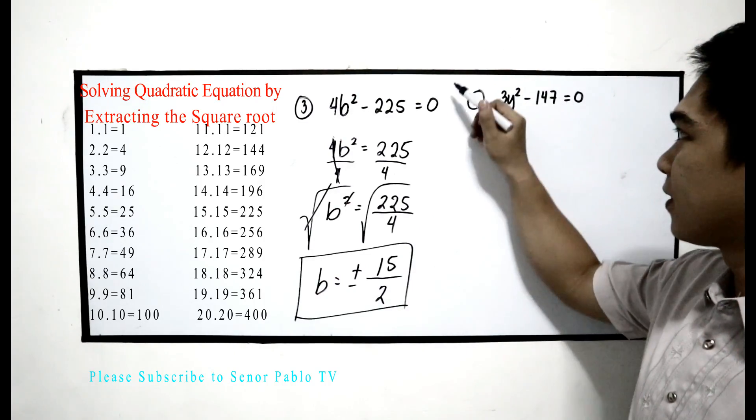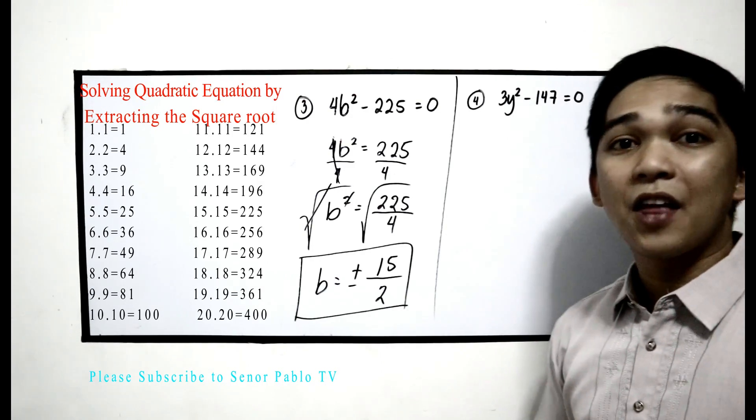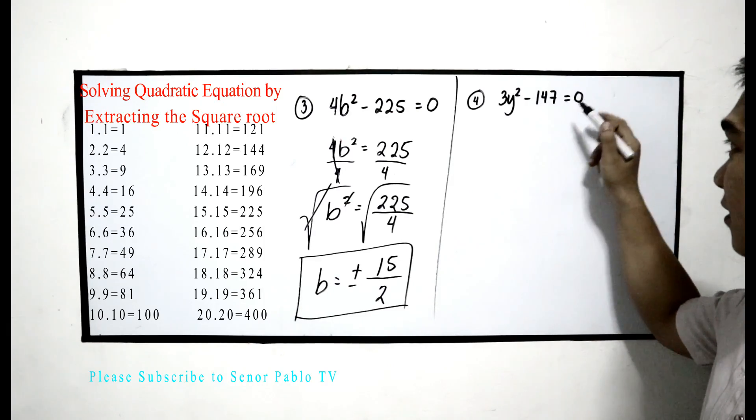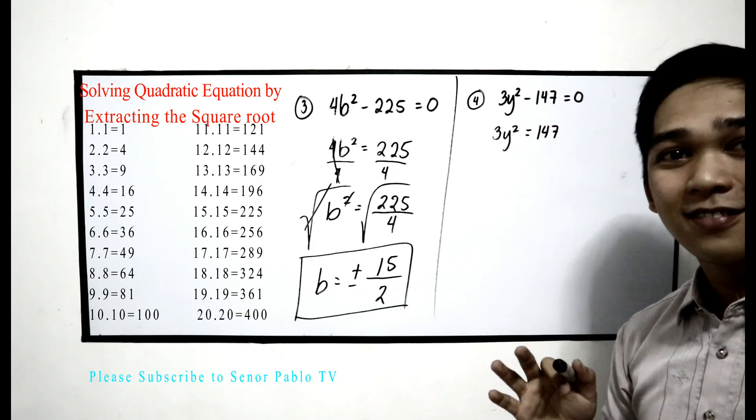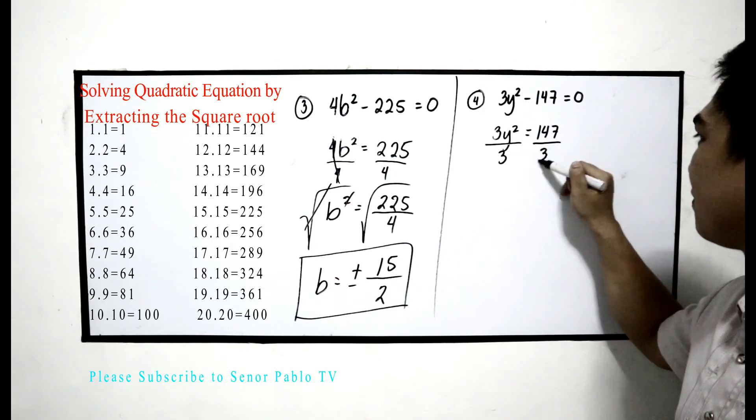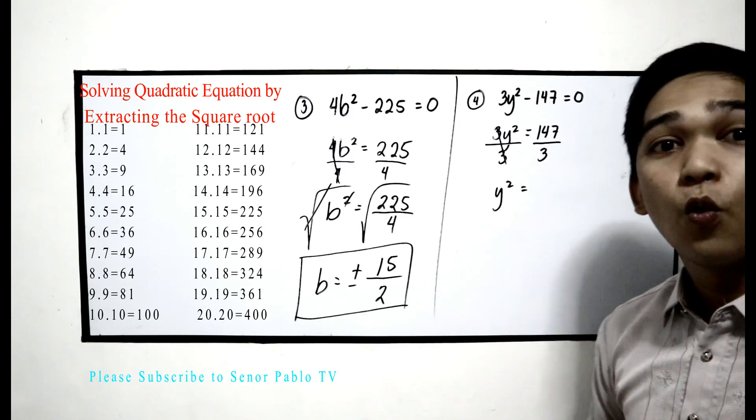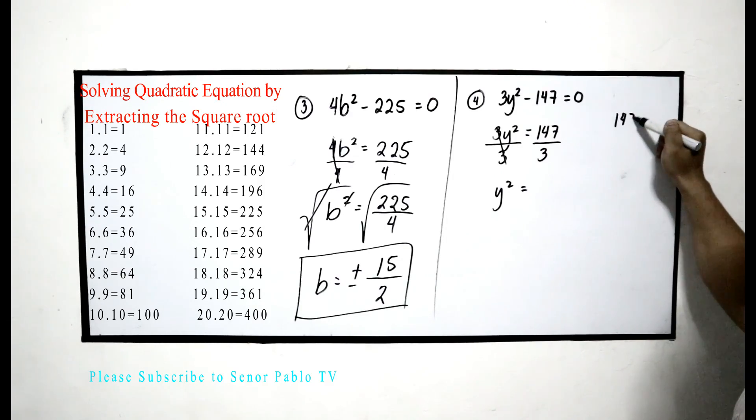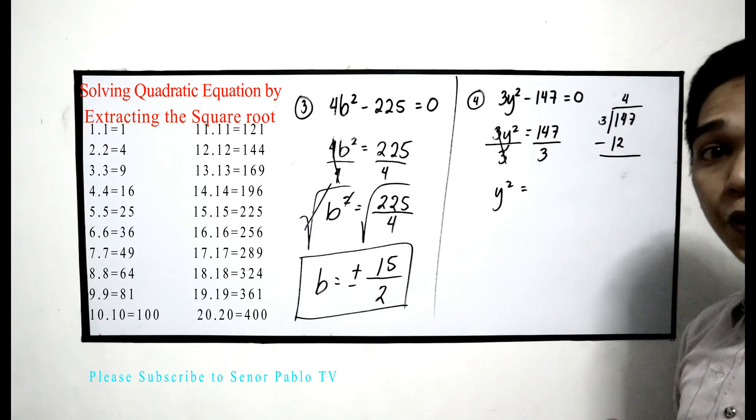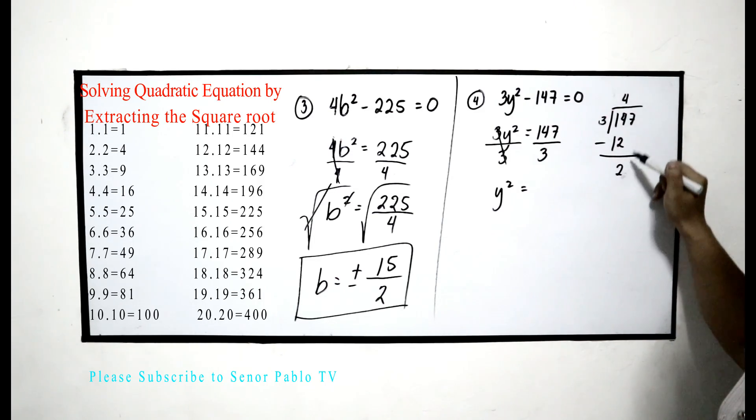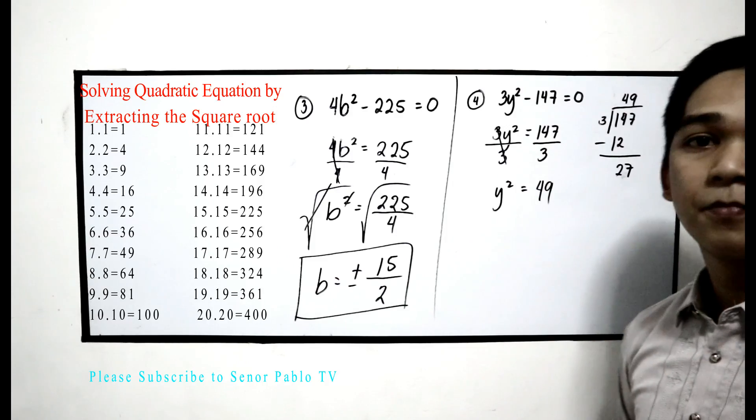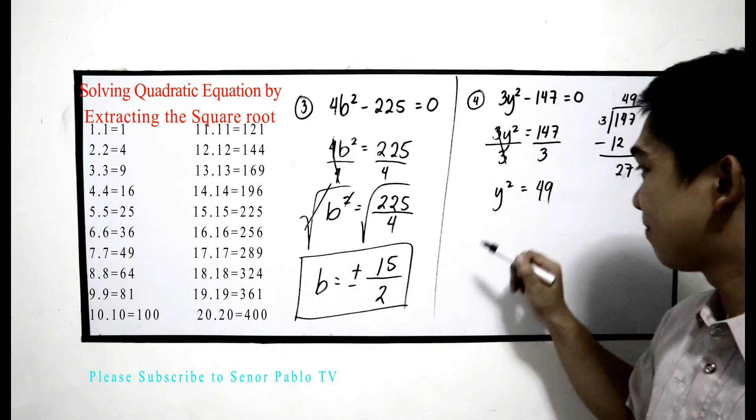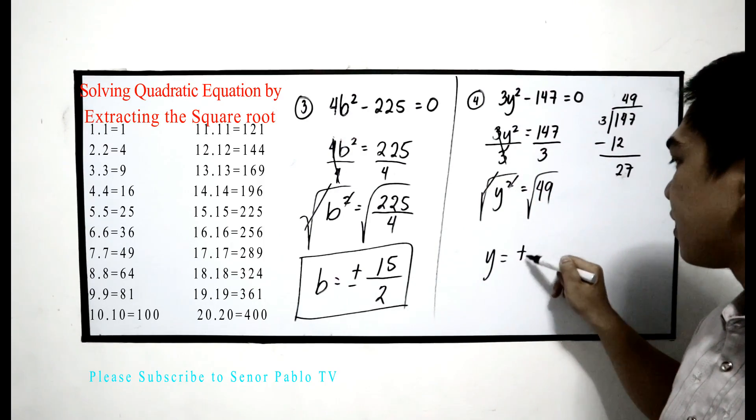Fourth example: 3y² - 147 = 0. Same process, isolate the variable. 3y² = 147. Now divide by 3. y² = 147 divided by 3. Let us divide: 14 divided by 3 is 4, 4 times 3 is 12, subtract to get 2, bring down 7, 27 divided by 3 is 9. So we have 49. To find y, get the square root. y = ±7.